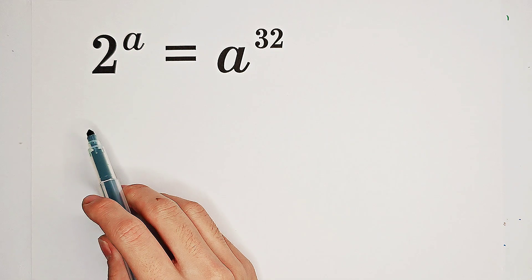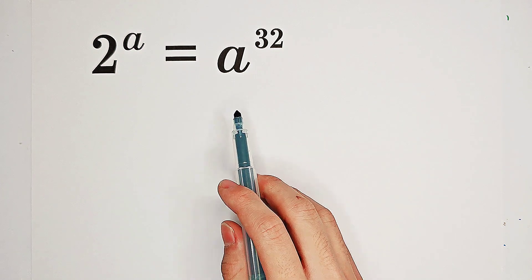Solve for A such that 2 to the power of A equals A to the power of 32. How should I solve it?